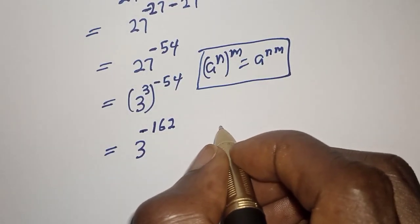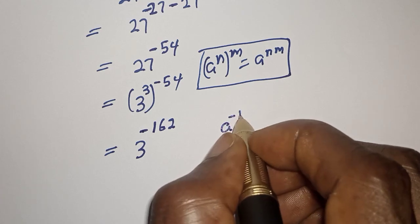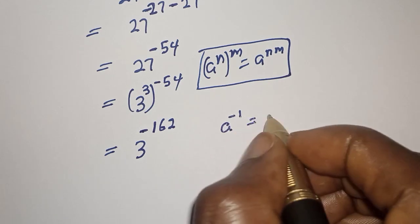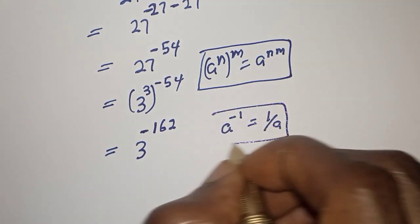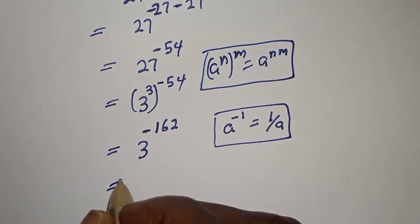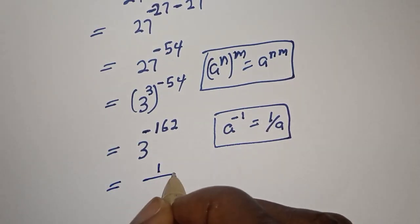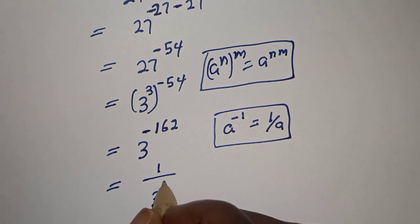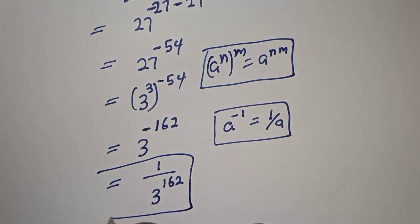So we get 1 over 3 raised to power 162, and this is equal to 1 over 3 raised to power 162. This is the final answer.